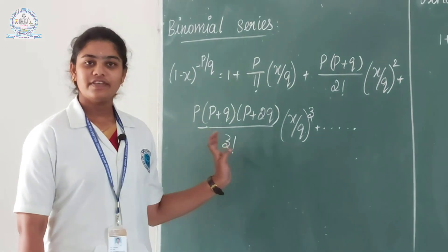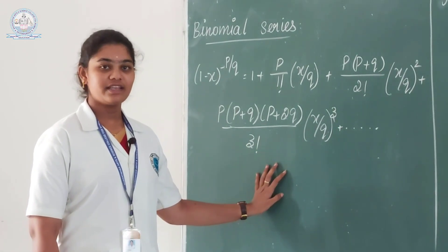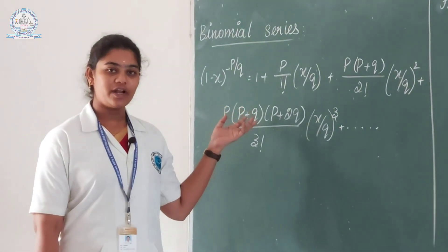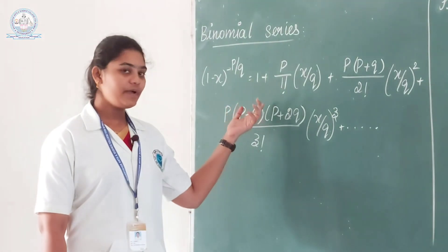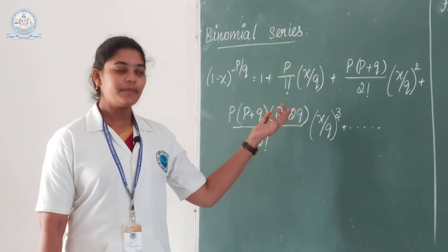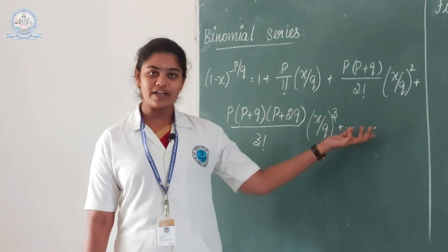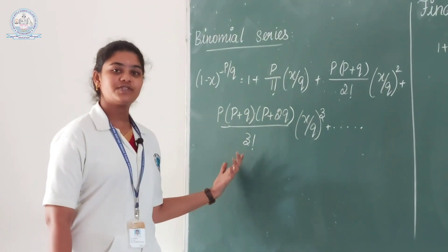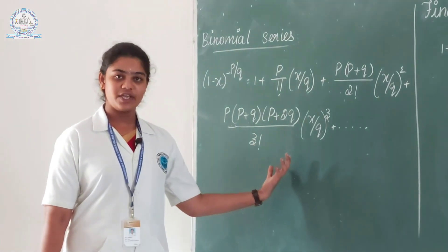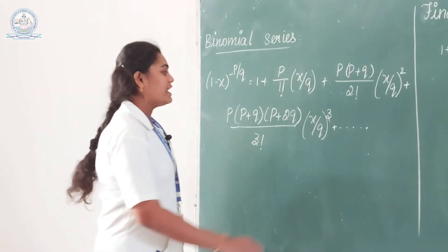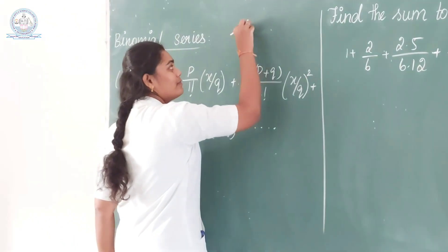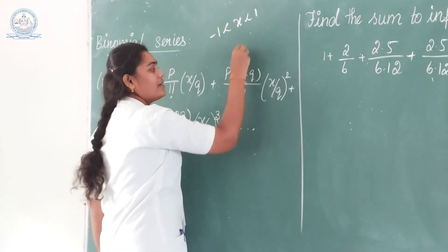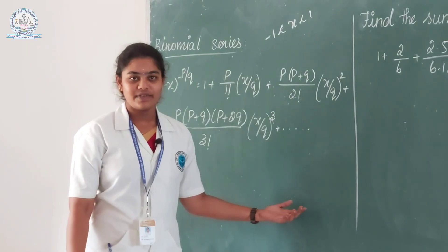First of all, we see the definition of binomial series. The definition is: (1 minus x) whole power minus p by q is equal to 1 plus p over 1 factorial times (x by q) plus p(p plus q) over 2 factorial times (x by q) squared plus p(p plus q)(p plus 2q) over 3 factorial times (x by q) cubed, up to infinity. Here x is in the open interval minus 1 to plus 1, and p and q are rational numbers.